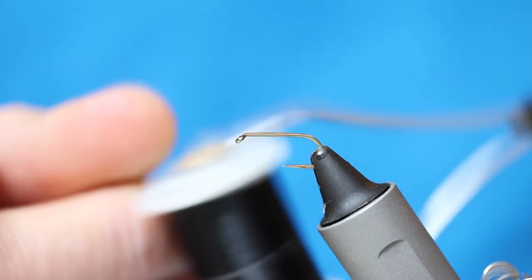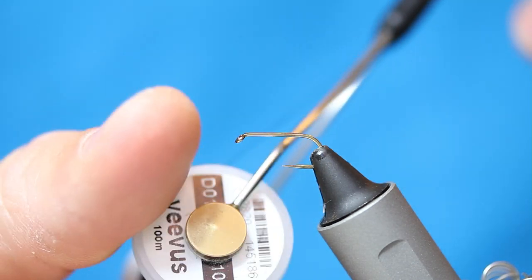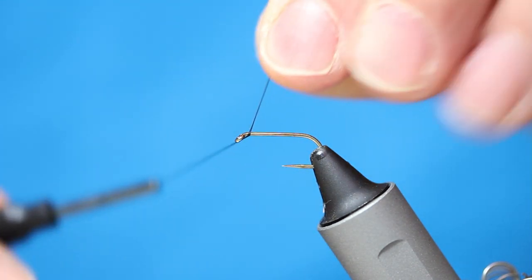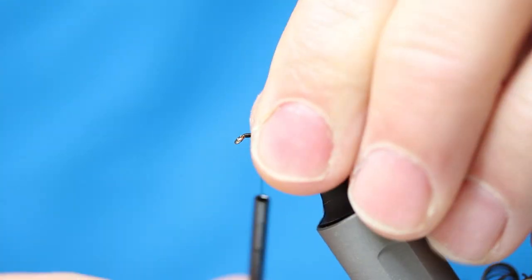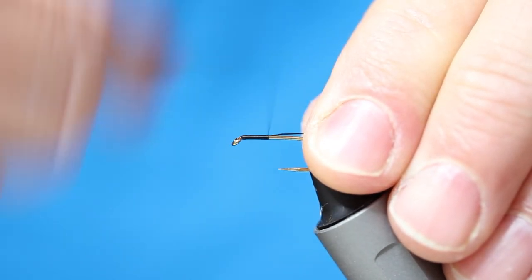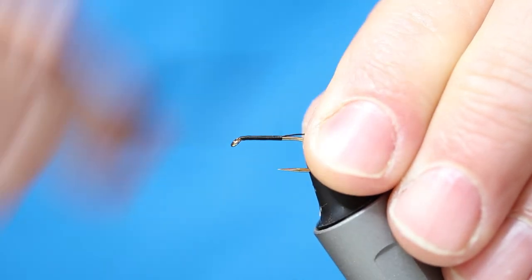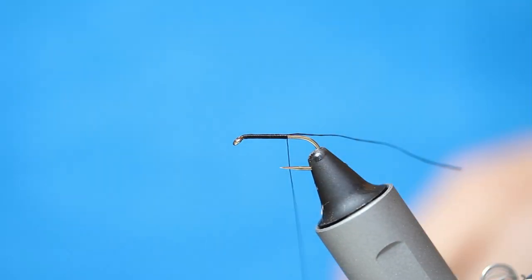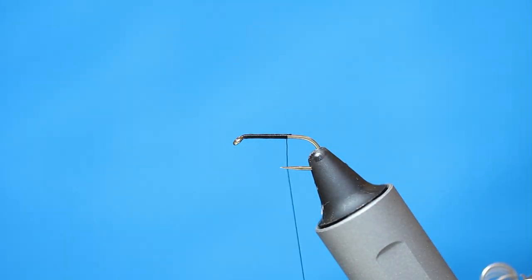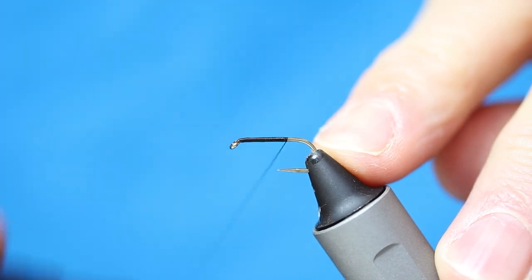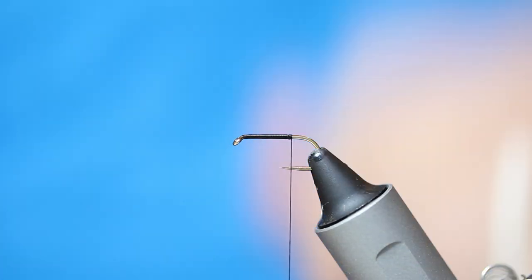So I've got a 1-0 thread, quite thin. I'm just going to start behind the eye to create my body. And we're going to come down a bit, and I'm just going to be a little bit past the point of the bend of the hook. There you go, just a little bit past the point of the bend of the hook.